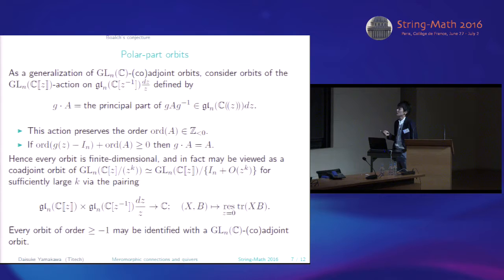So this action preserves the order, order as the formal Laurent series. And if the order of G minus the identity plus the order of A is at least zero, then G stabilizes A. So because G A G inverse is, in this case, has trivial principal part. So every orbit is finite dimensional. And, in fact, may be viewed as a coadjoint orbit of this quotient group for sufficiently large K via such a dual pairing. And also, every orbit of order at least minus one may be identified with just a conjugacy class of matrices.